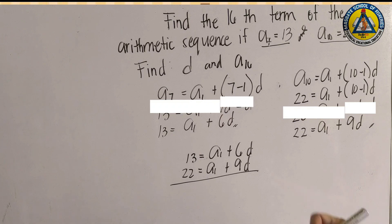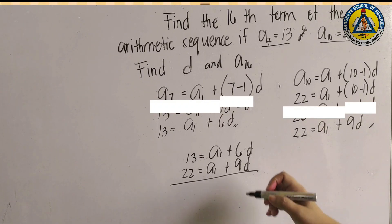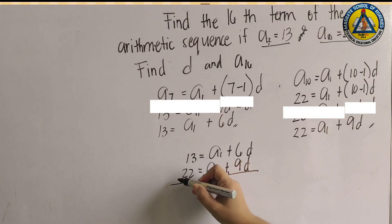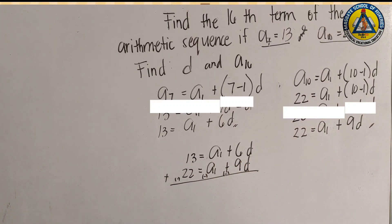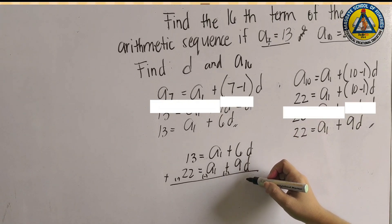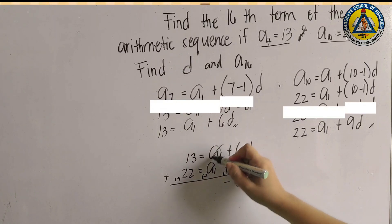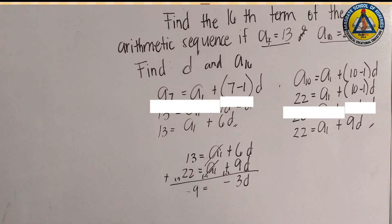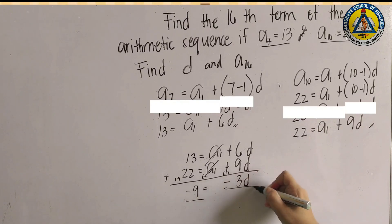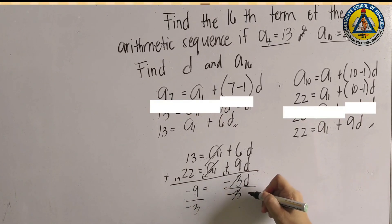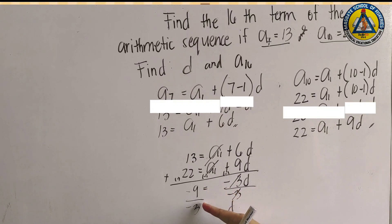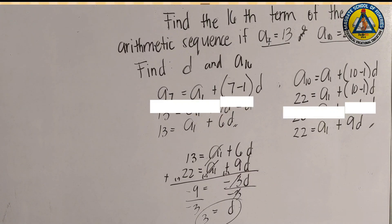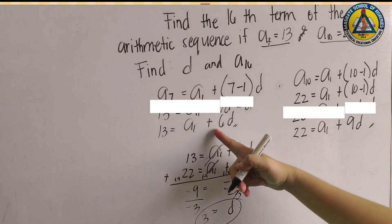Subtracting the two equations — changing signs and proceeding to addition — we get: 6d - 9d = -3d, and 13 - 22 = -9. So -9 = -3d. Dividing both sides by -3, therefore d = 3. Our common difference is equal to 3.